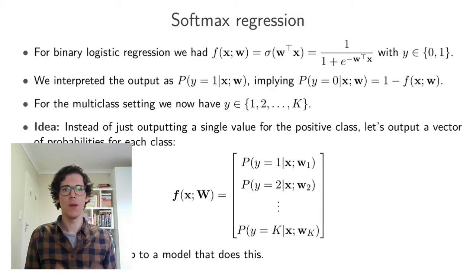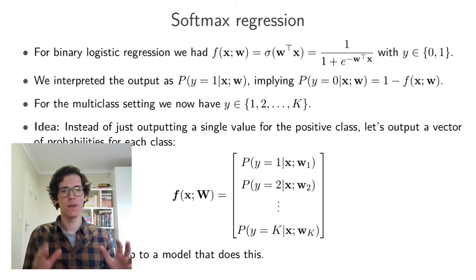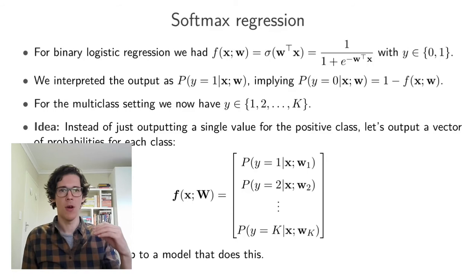We've looked at one-versus-rest classification, which is one approach to extend binary logistic regression to the multi-class setting. In this video, we're going to look at softmax regression, which is a more principled way to directly extend a binary logistic regression model to the multi-class case. We'll see that softmax regression outputs a vector where each element can be interpreted as the probability of the input belonging to that particular class.